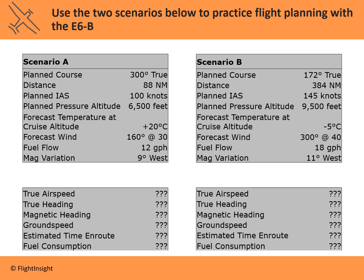Let's do a couple of practice sessions to really get in the habit of calculating everything we need for a flight, because practice really does make perfect with this E6B. It's a little bizarre and strange to use at first, but if you get into the habit of doing it a couple of times, it's not so bad. So let's take two scenarios: scenario A and scenario B. We'll use given information — similar to what we used when planning the example flight — and find all the unknowns like true airspeed, true heading, etc.